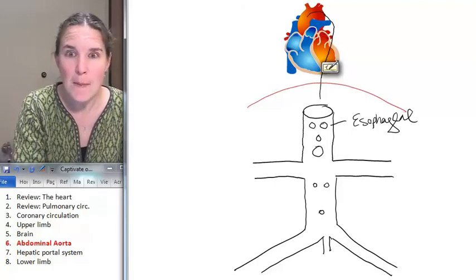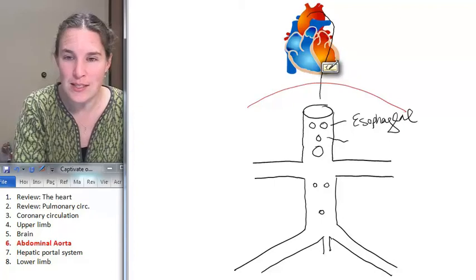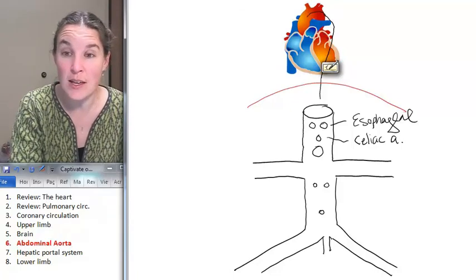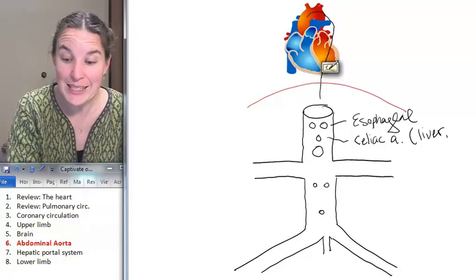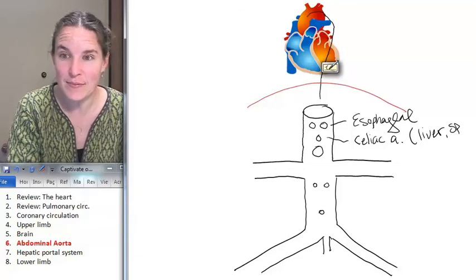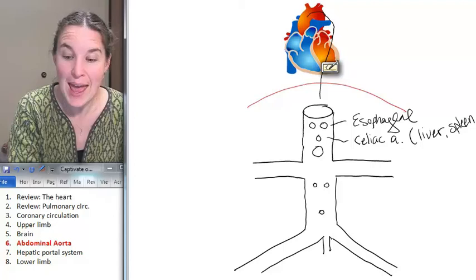The nose is called the celiac artery. And it actually fuels the liver, the spleen, and the stomach.